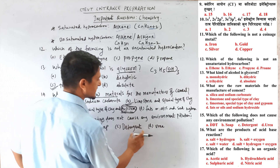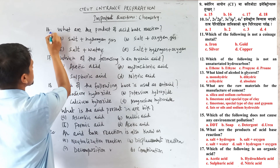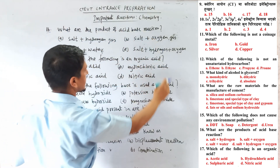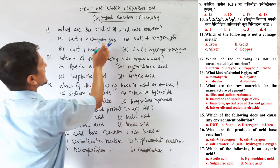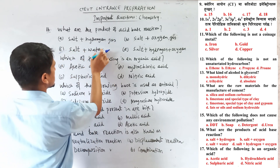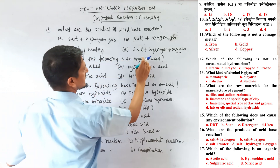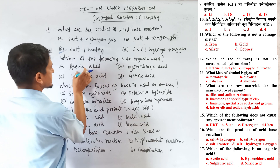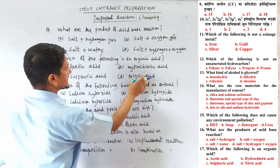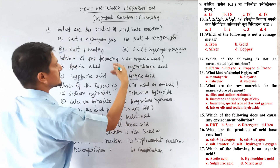Question number 16: What are the products of an acid-base reaction? Acid and base react to form salt and water — option C. Question number 17: Which of the following is an organic acid? Hydrochloric acid, sulfuric acid, and nitric acid are inorganic acids; acetic acid is the organic acid.